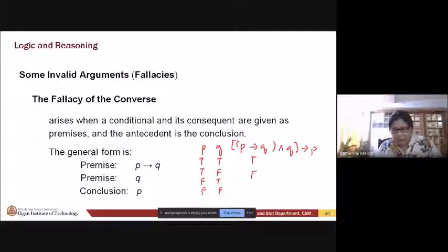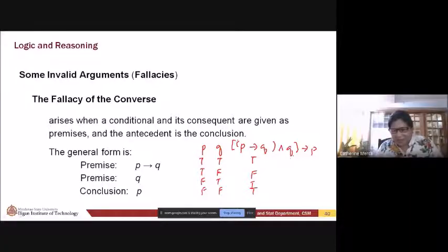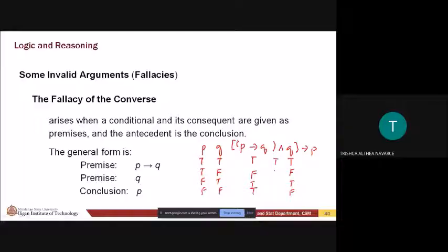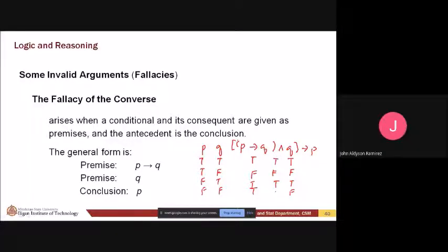Building the truth table: p implies q — true implies true is true, true implies false is false, false implies true is true, false implies false is true. For the conjunction of premises, true and true is true, and false and false is false. The results show that not all rows give true.